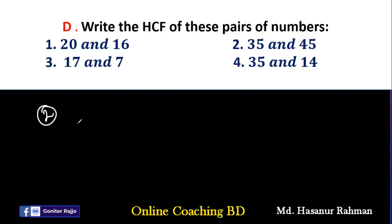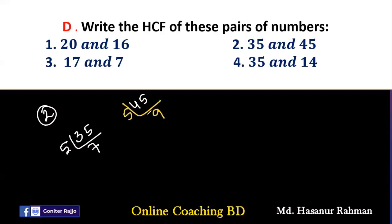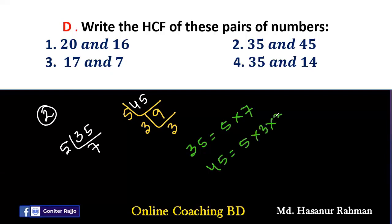Number 2: 35 and 45. We find prime factors: 35÷5=7, so 35 = 5×7. For 45: 45÷5=9, 9÷3=3, so 45 = 5×3×3. Then 5 is the common factor of 35 and 45. So HCF of 35 and 45 is 5.